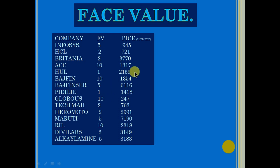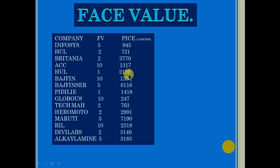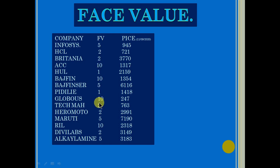When you look at this, you find it is very difficult to correlate 945 with 721, and at the same time Tech Mahindra at 763, in the absence of face value normalization. Although all these three stocks are great stocks, there is no two opinions about that.